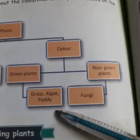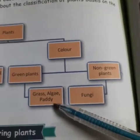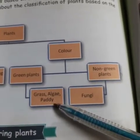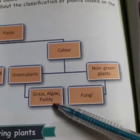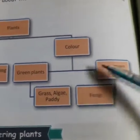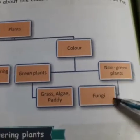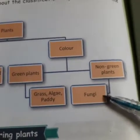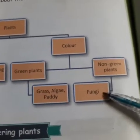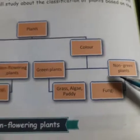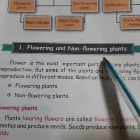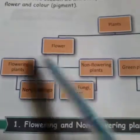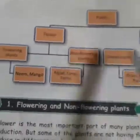Green Plants examples: Grass, Algae, Paddy, Nell, Pascale. Non-Green Plants examples: Fungi, Poonjaikel. Now — Poova Thaavarangal, Patschayam First — Flowering and Non-Flowering Plants.